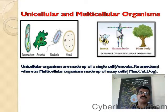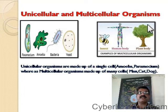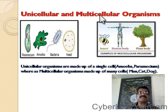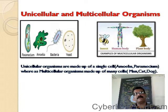And multicellular organisms — the word 'multi' means many. Multicellular organisms are organisms that possess many cells. For example, human beings, dogs, cats, snakes, tiger, lion — all these organisms are made up of many cells, so they are called multicellular organisms.